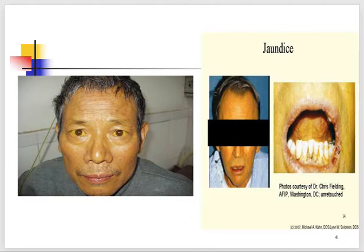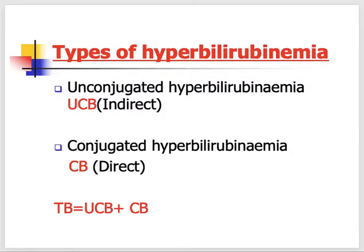This is quite basic — it is taught in physiology in great detail. Bilirubin is present in the body in both unconjugated form, also called indirect, and conjugated form, also called direct. Total bilirubin is the sum of both. Unconjugated bilirubin is insoluble in water and present in the blood bound with albumin.